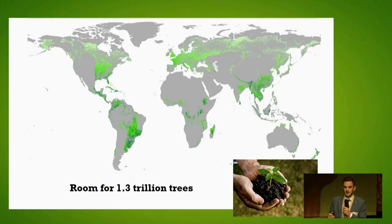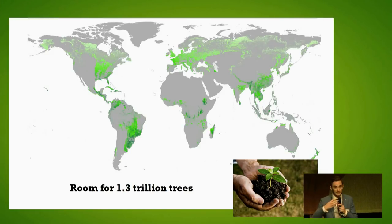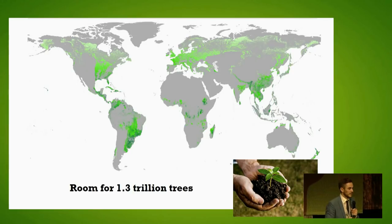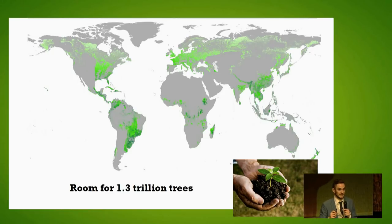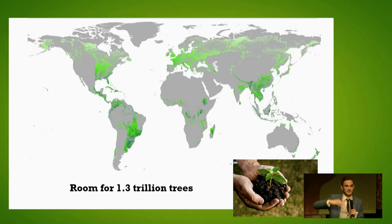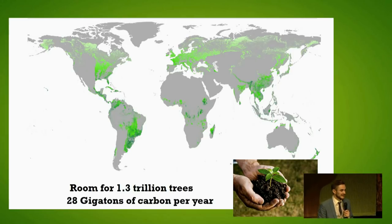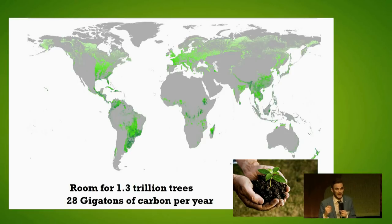We can also use this map to understand how many trees can be restored. When we map our forests into the IUCN's restoration areas around the world, we can see that there is room for about 1.3 trillion trees. There are currently forests in many of those areas, but if we can restore those forests to a healthy, living state, they have the potential to one day capture up to 28 gigatons of carbon per year.